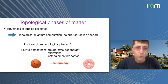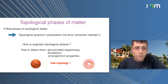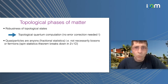For instance, the ground state degeneracy will depend on the genus of the manifold or of the system. The excitations can be very weird and exotic, and entanglement properties are important. In this workshop you will see that we are using a lot of tensor network techniques, precisely because of this entanglement.